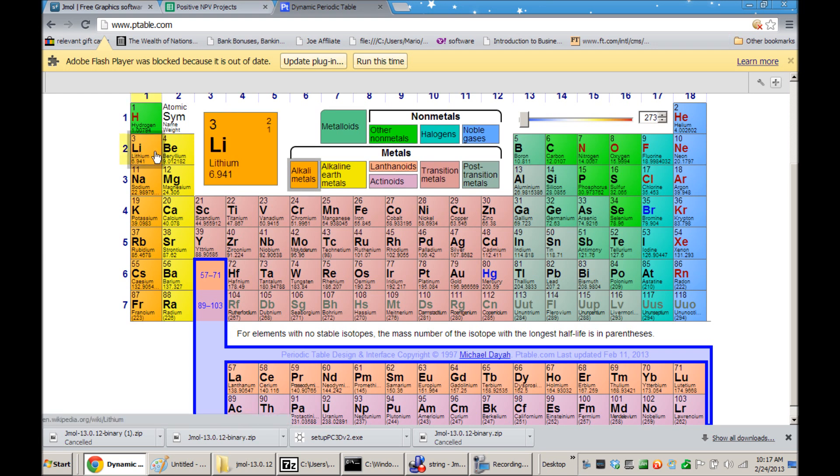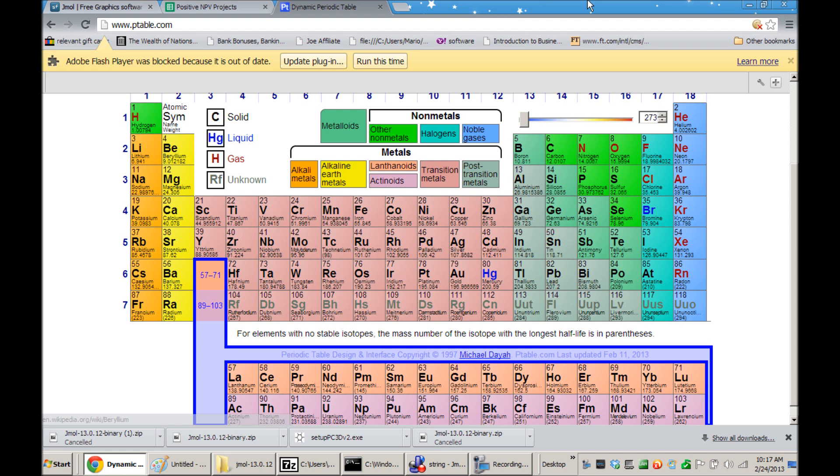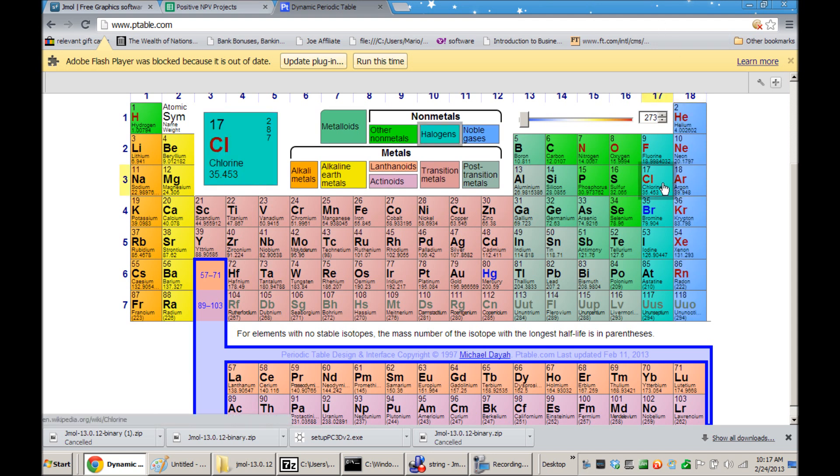So beryllium has one, two valence electrons, and chlorine has seven. It's in the seventh column.